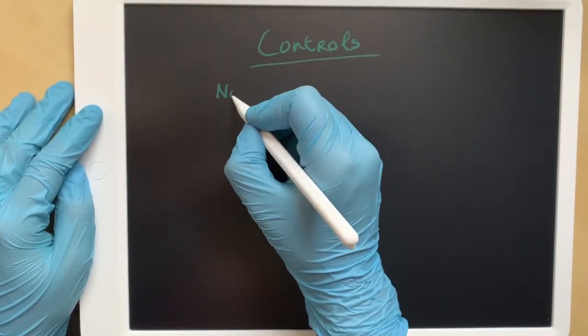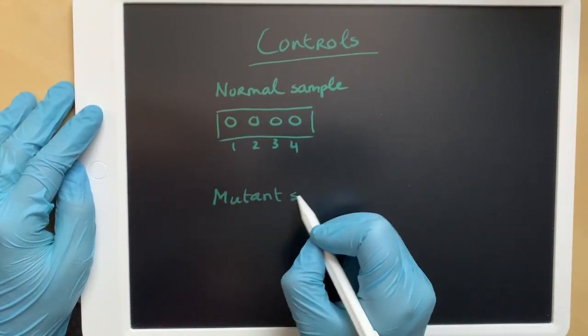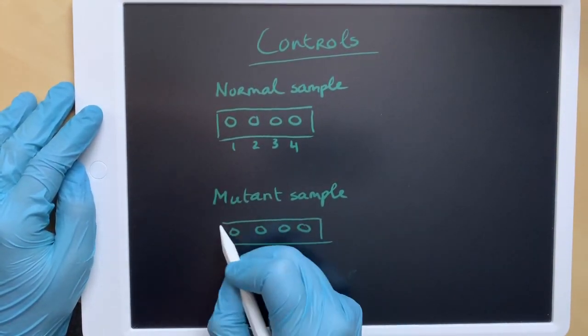Controls. For this method, four different controls are used. Apart from the patient samples, there are also two samples of which one is known to be homozygous for the normal allele, and one is known to be homozygous for the mutant allele.